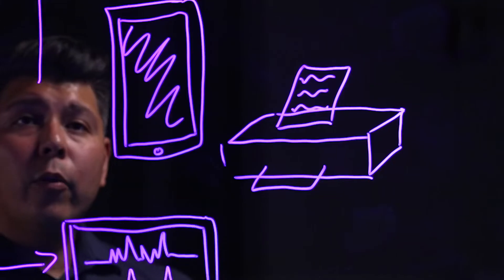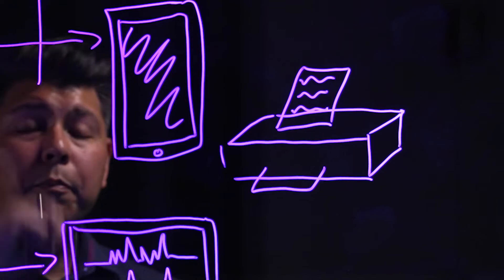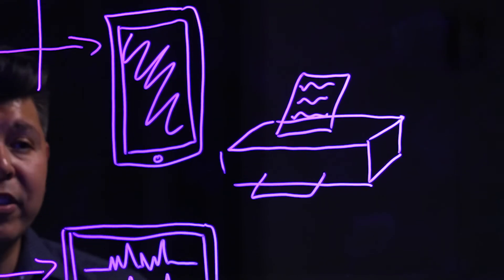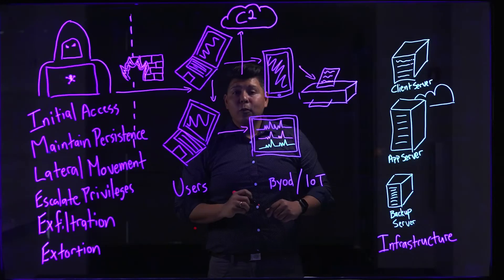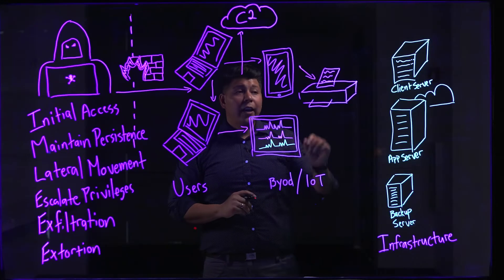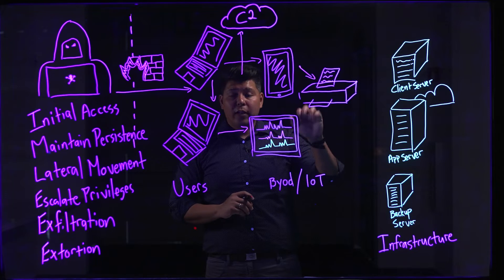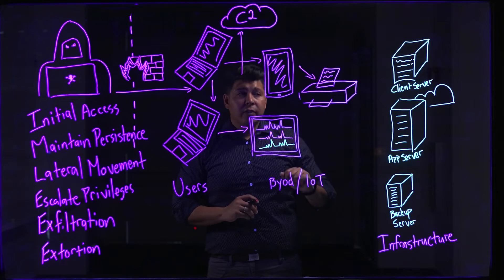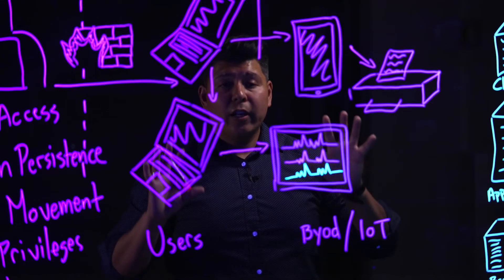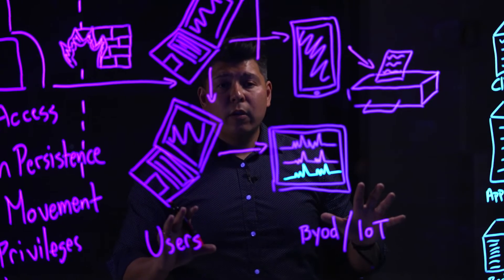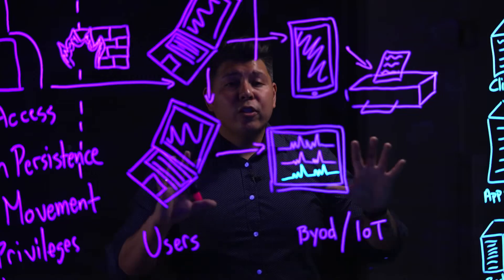Maybe they're in BYOD devices or mobile devices. Maybe they're in devices like a printer or an IoT device. These are ways that they are proliferating across your network — spreading throughout it.